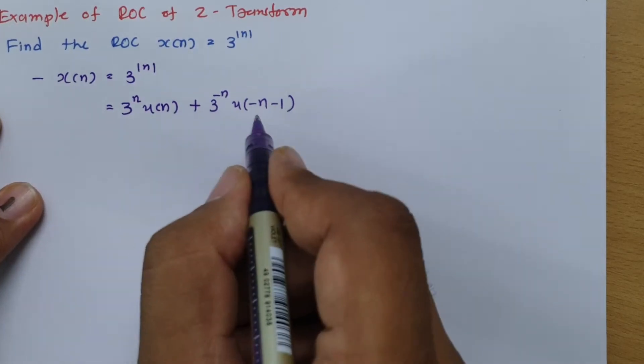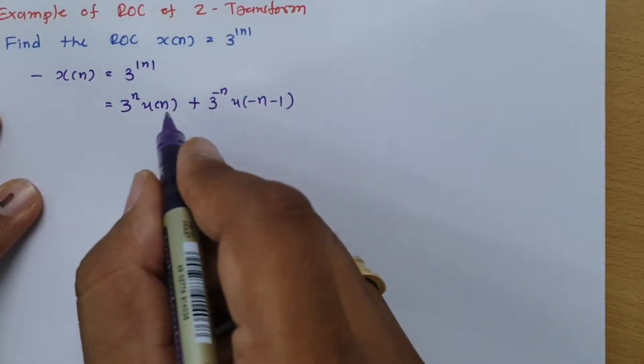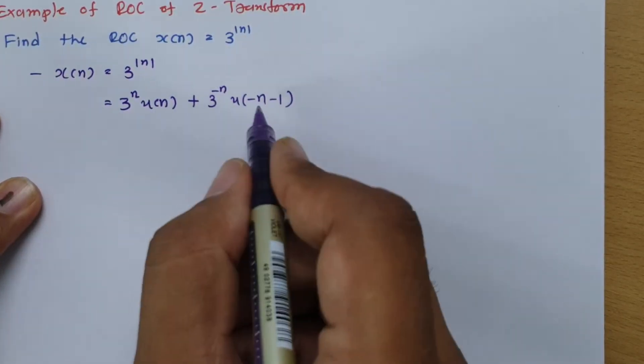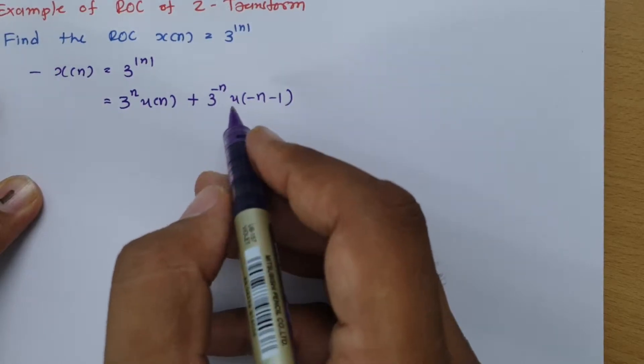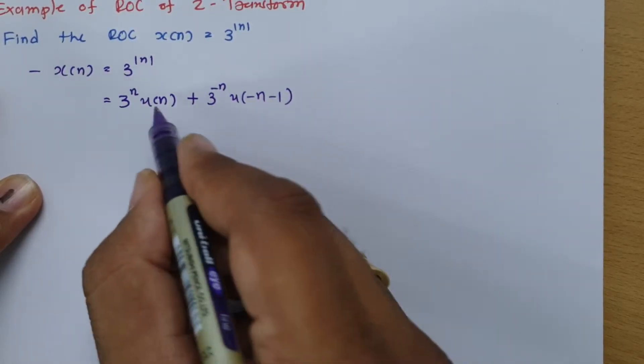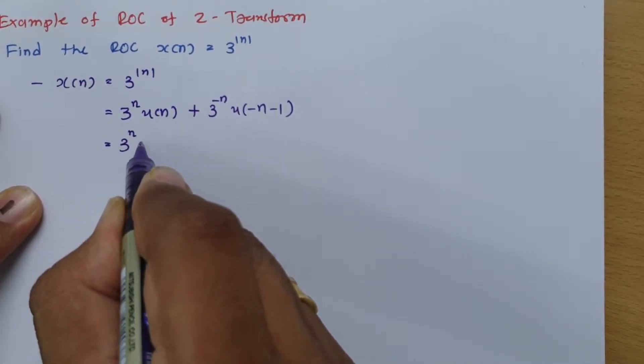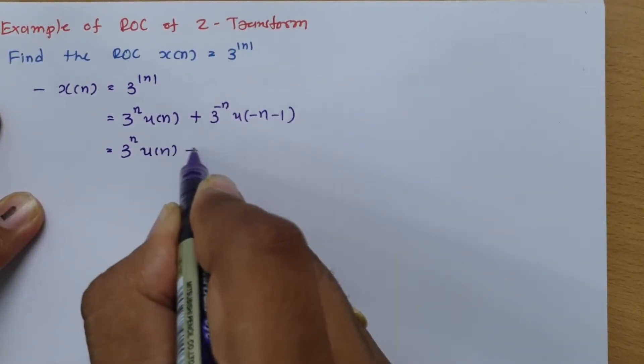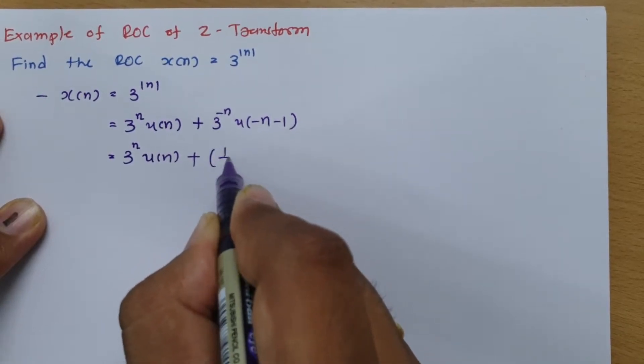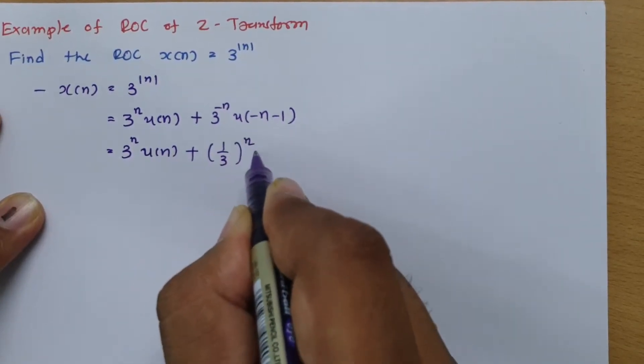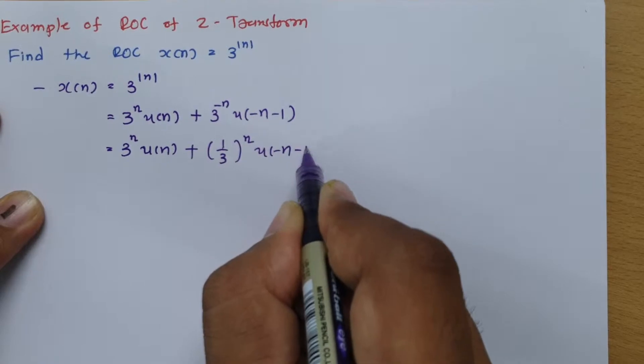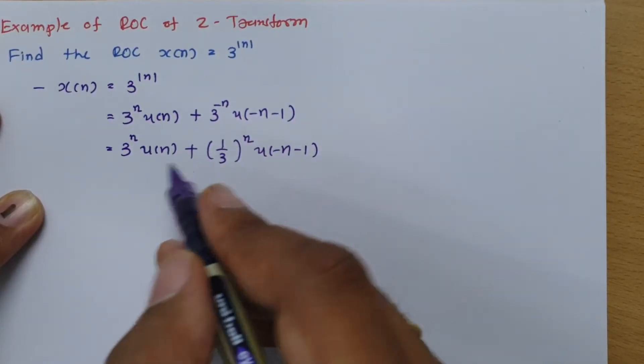Now I cannot directly form ROC based on this. Because for ROC calculation we need Z-transform, so I need to write this in standard form. So I am writing it now: 3^n u(n) plus I can say (1/3)^n u(-n-1). Now this is in standard form and we can apply Z-transform.